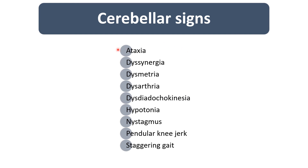To summarize the cerebellar signs: Ataxia is the cardinal sign of cerebellar disease. Dyssynergia means the child cannot coordinate muscle contractions for a particular act. Dysmetria means the child cannot judge distance when reaching for an object. Other signs include dysarthria, dysdiadochokinesia (inability to perform alternate movements), hypotonia, nystagmus, pendular knee jerk, and staggering gait.